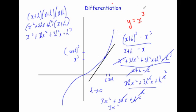This process of going from the curve y equals x cubed to its gradient is called differentiation. The notation is dy by dx, which stands for the change in y over the change in x. So dy by dx is equal to 3x squared.